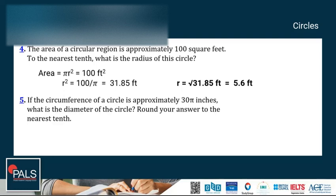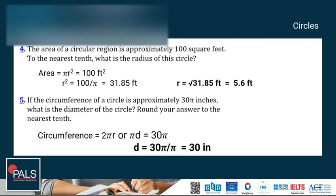Number five: we need to find the diameter of the circle with a circumference that is approximately 30π. So using the circumference formula, we've got 2πr or πd = 30π. Then the diameter equals 35 divided by pi, which equals 30 inches.